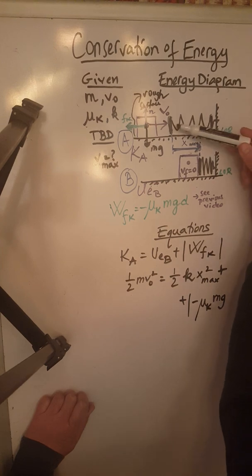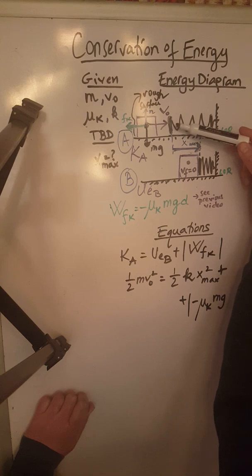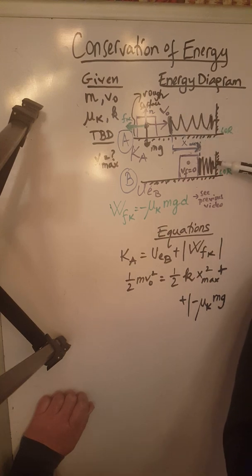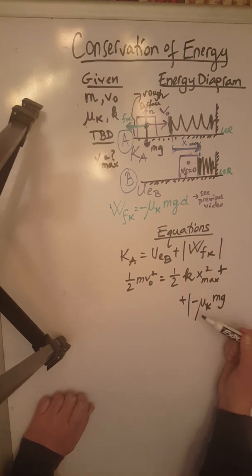Because the displacement is x max as given by the problem. The displacement of the object from when it starts touching the spring to compress it until it stops because the spring has reached its maximum compression. So it's going to be absolute value of mu K M G x max.